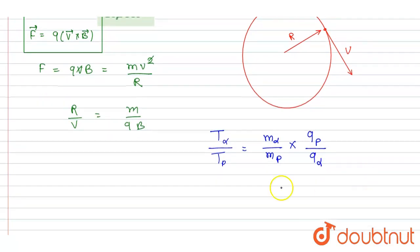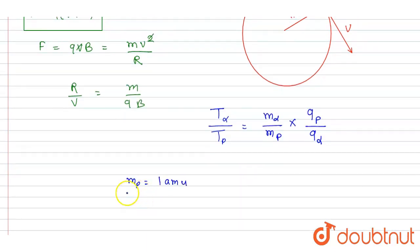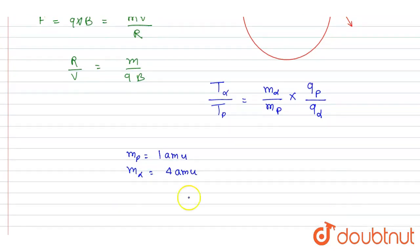Now if I talk about the mass of the proton and mass of the alpha particle: mass of proton is 1 amu, alpha is 4 amu. Charge: proton is 1e, alpha particle is 2e.